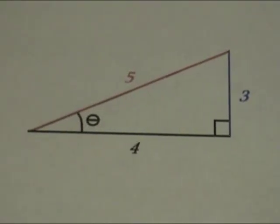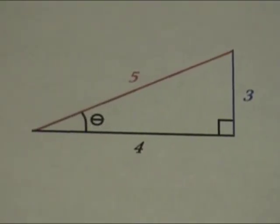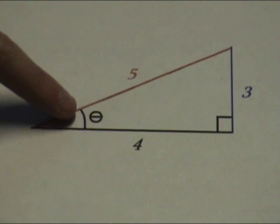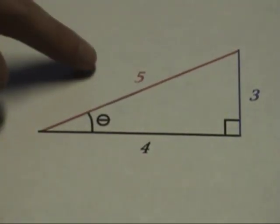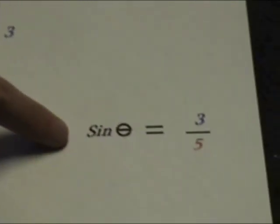An example of how to find the sine of this angle would be: look for your angle, find the opposite side length, and put that over your hypotenuse side length to get your answer.